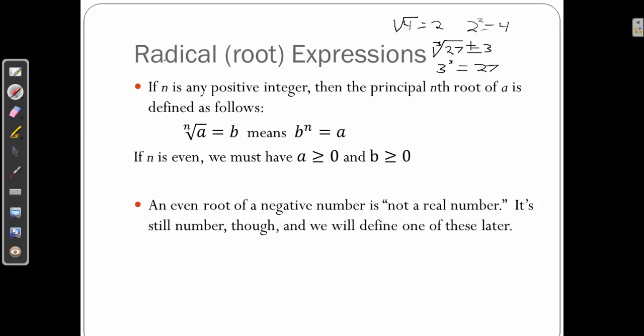Roots are, in essence, inverses of exponents. An exponent will take a number times itself a certain number of times. A root will find the number that if you multiply it by itself that number of times, it will equal the number you're trying to take a root of. So the nth root of a is b.